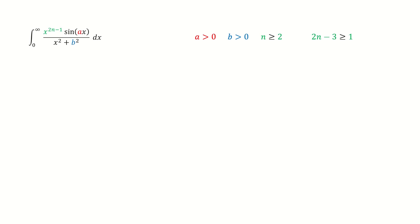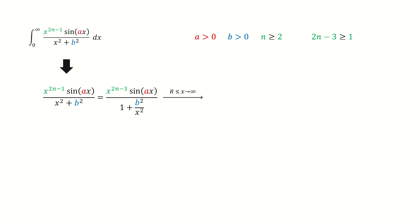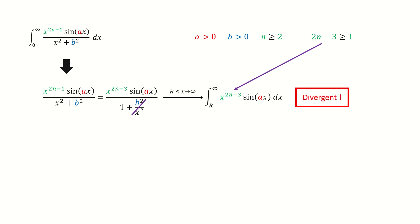Now let's look at this integral with a sin function. We take the integral function and divide x² on both numerator and denominator. Now we let x be sufficiently large and we can ignore this term. So the integral function goes to this form, and then we do the integration. Note that the power index is greater or equal to 1, so this integral is divergent. Therefore, this general case is divergent.